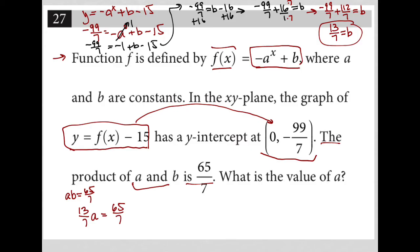And then the question asks, what is the value of a? All I have left to do here is to isolate a. I can isolate this by multiplying by the reciprocal of 13 over 7, which is 7 over 13, on both sides of the equation.